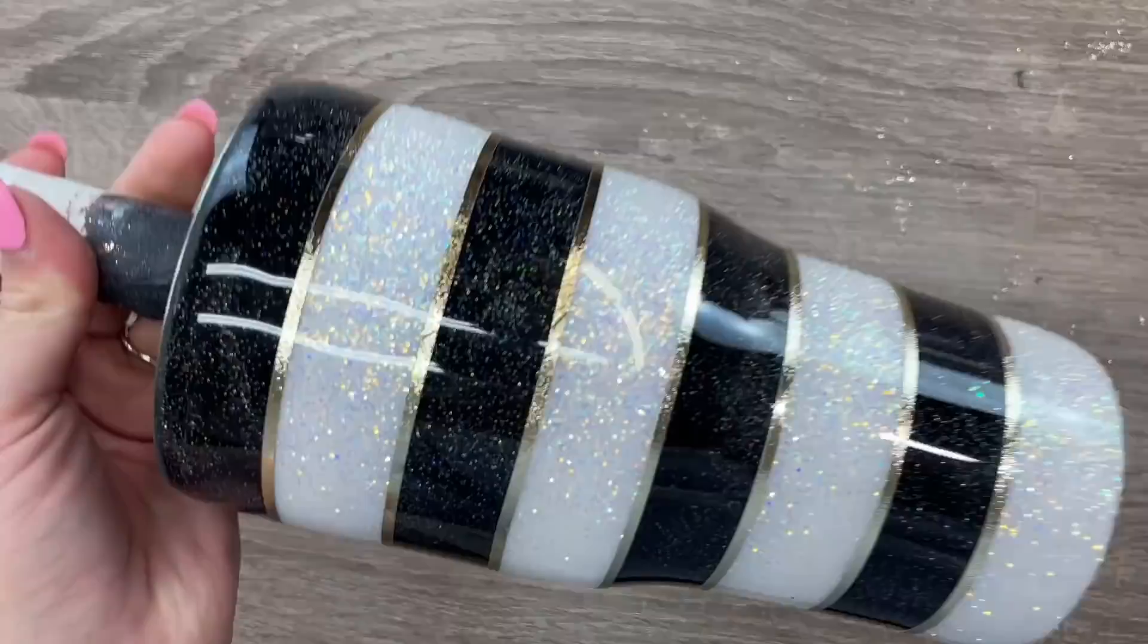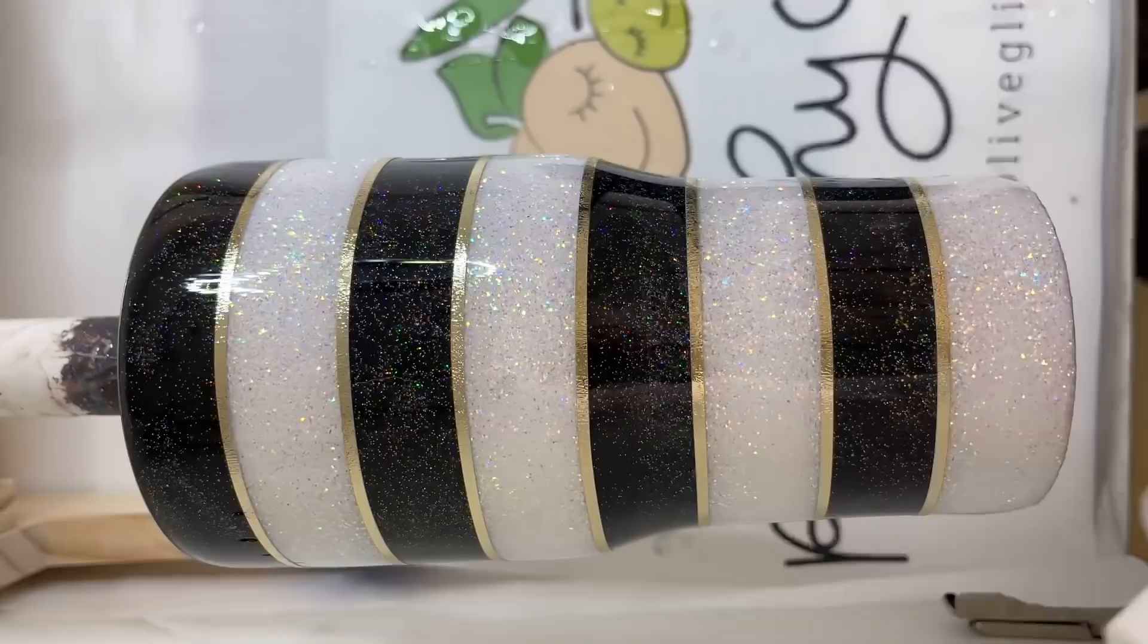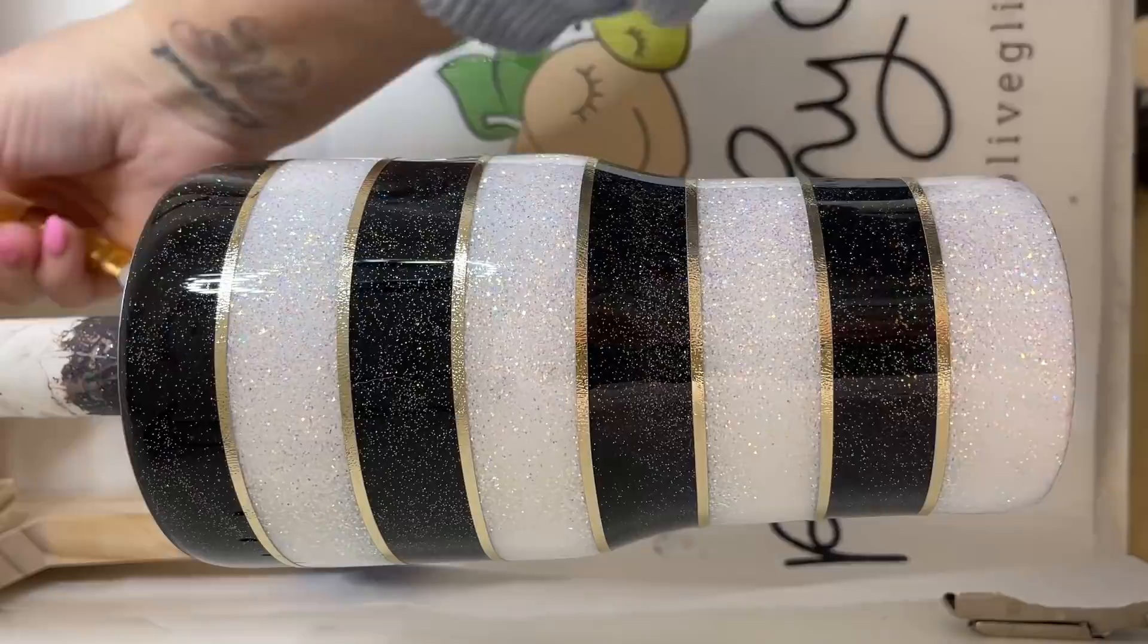I am going to seal my vinyl today. I'm going to use the same stuff I always use to seal my vinyl. It's this Counterculture water-based urethane sealer. It is definitely not epoxy.